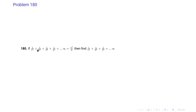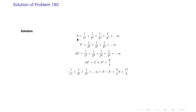Problem 180: Given that 1/1² + 1/2² + 1/3² + … = π²/6, find 1/1² + 1/3² + 1/5² + …. Let S = π²/6 be the full series and S′ be the sum over odd terms. The even-term sum is S/4 (factoring out 1/2²), so S − S′ = S/4, giving S′ = (3/4)S = π²/8.